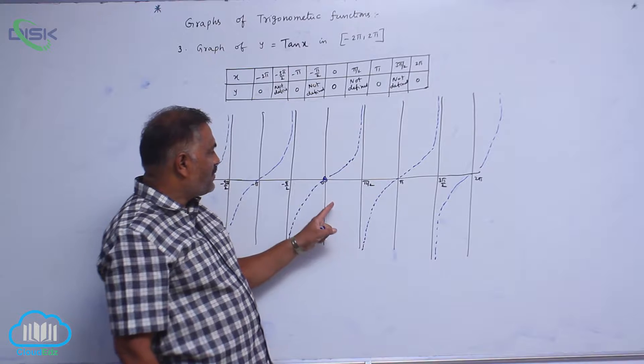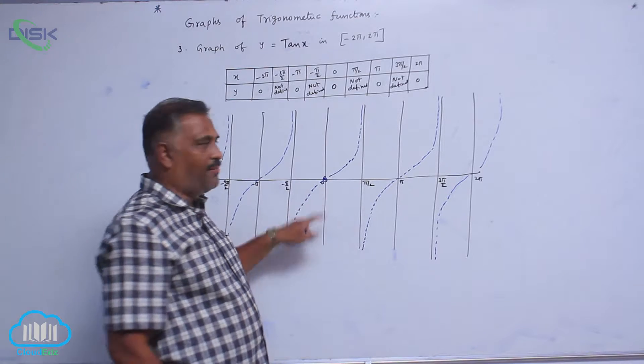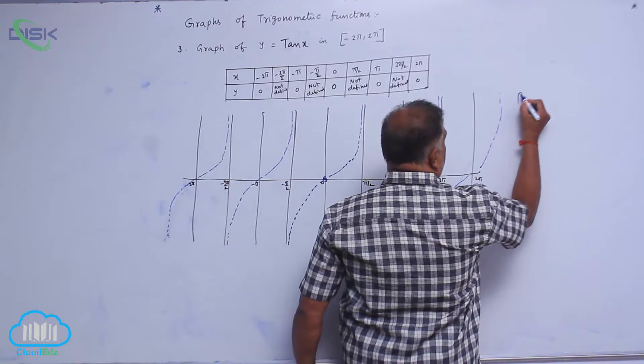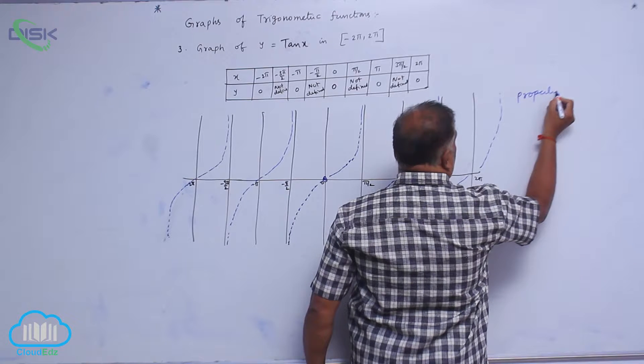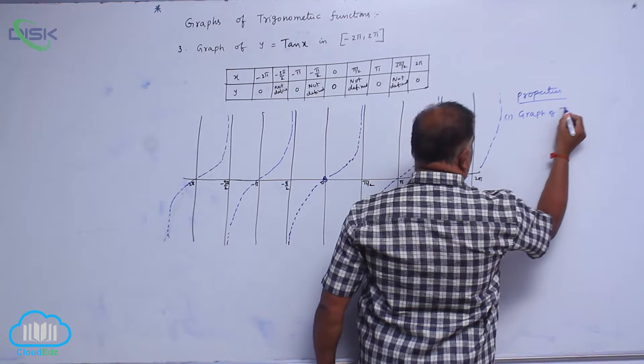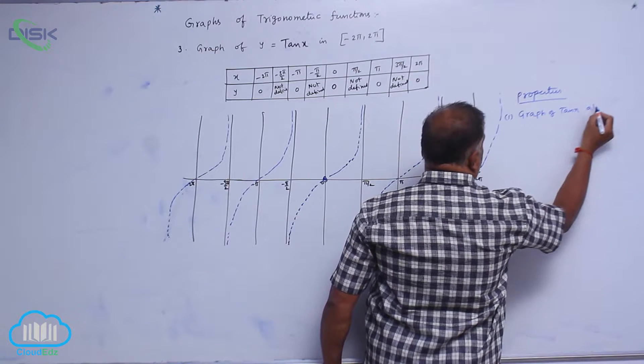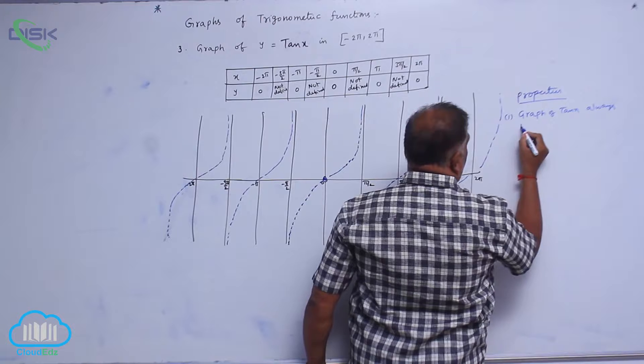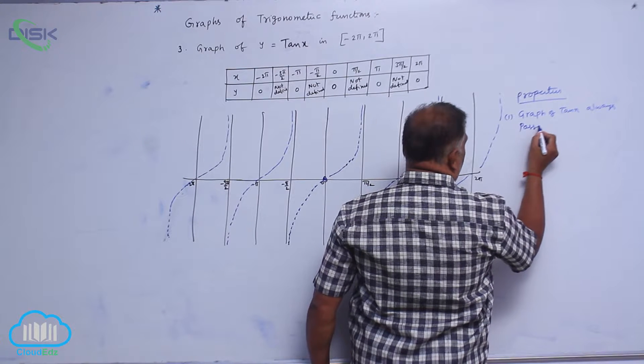Now, you observe that the graph of tan x always passes through origin. So, property number 1: graph of tan x always passes through origin.